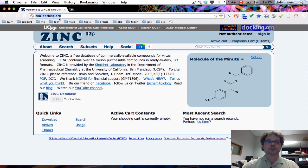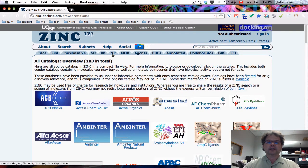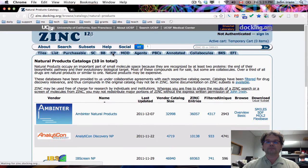So this is the ZINC interface, zinc.docking.org. And if you go to Subsets, Catalog, you'll find a tab. This is all the catalogs that are in ZINC, but we're interested in the natural products. So we're going to click on NP for natural products. If you hover your mouse over there, it'll say Natural Products.